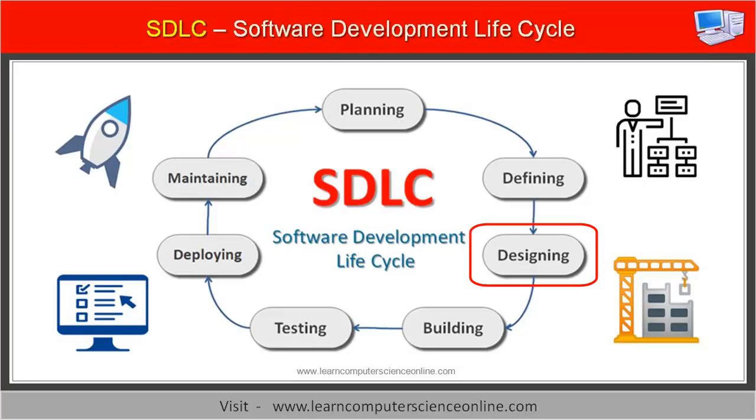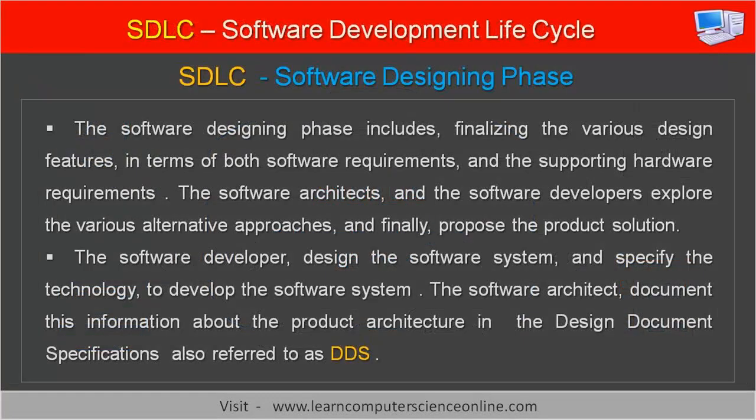The third phase in the software development process is designing the software. The software designing phase includes finalizing the various design features in terms of both software requirements and supporting hardware requirements. The software architects and developers explore various alternative approaches and propose the product solution. The software developer designs the software system and specifies the technology to develop it. The software architect documents this information about the product architecture in the design document specifications, also referred to as DDS.